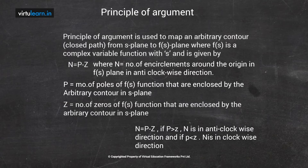From this concept we can develop the Principle of Argument equation: N = P - Z, where N is the number of encirclements around the origin in the anticlockwise direction. If P is greater than Z, encirclements are in the anticlockwise direction. If Z is greater than P, N is negative, meaning clockwise encirclements. More zeros give clockwise encirclements; more poles give anticlockwise encirclements. The arbitrary contour must not pass through any poles or zeros of f(s), as this causes discontinuities in the f(s) plane mapping.